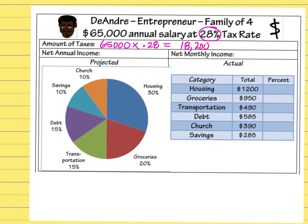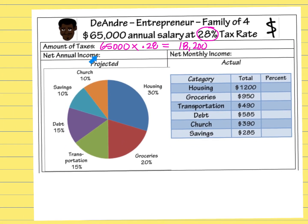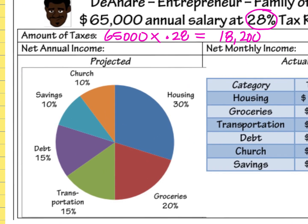The next thing in the chart is net annual income — this means how much money do you actually get to keep after you paid your taxes. To get this amount, I subtract the dollar amount for taxes from my annual salary: $65,000 minus $18,200. That gives us $46,800 for the net annual income.